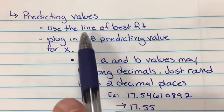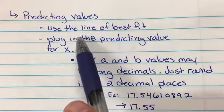With the predicting values, you're going to need to use the line of best fit, which is why we want to find all that information.